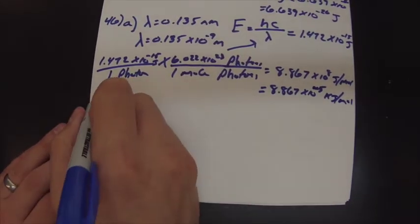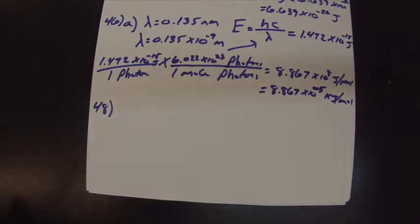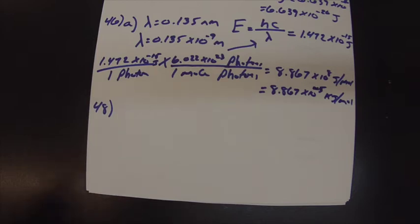Next up is number 48, which is kind of a conceptual question. It says what happens to the interference pattern if the electron going through the slits is decreased to one electron per hour. As long as you're not observing it and you're still using small particles, the same interference pattern will happen — it'll just take longer to develop.